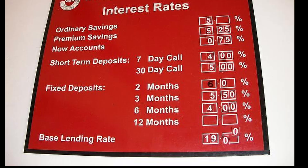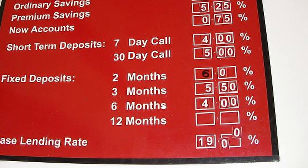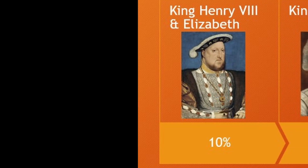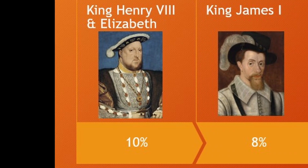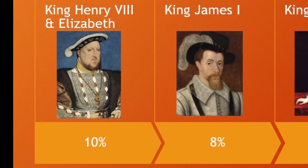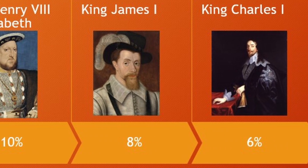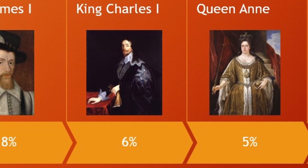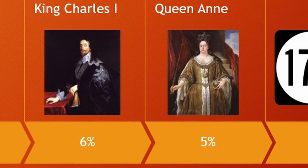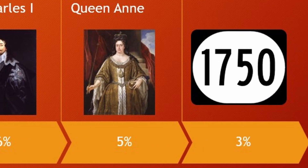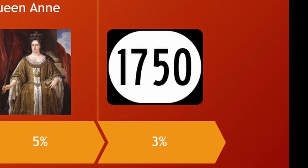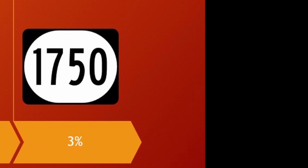Smith looks at the history of interest rates in England. In the reigns of Henry VIII and his children, interest rates had been legally capped at 10%. During the reign of James I the cap fell to 8%, and in the reign of Charles I it was reduced to 6%. By the reign of Queen Anne it was 5%, falling to 3% by the 1750s.